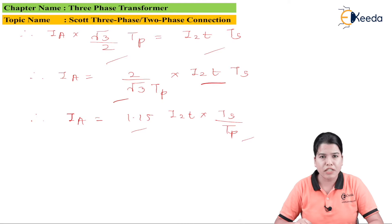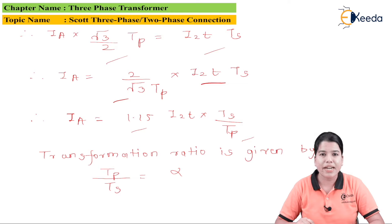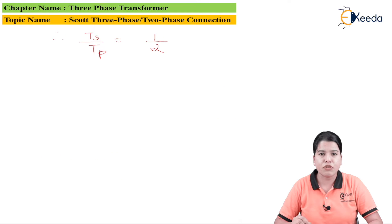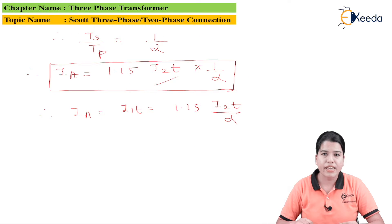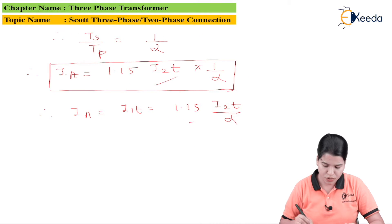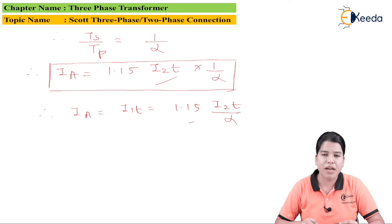We know that the transformation ratio is given by TP by TS equals alpha. Taking the reciprocal, TS by TP equals 1 divided by alpha. Substituting this value: IA equals I1T equals 1.15 multiplied by I2T divided by alpha.